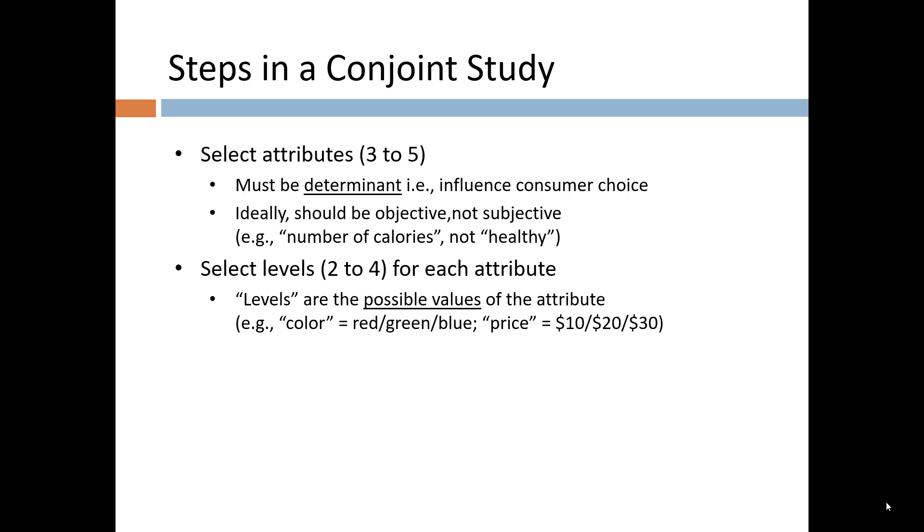Next, we select two to four levels for each attribute. A two-level attribute is one in which the attribute is either present or absent, so the levels could typically be yes or no. You can have attributes with three or more levels, such as color and price. The attributes should be feasible, that is, realistic, and they should be unambiguous, that is, not vague or imprecise.